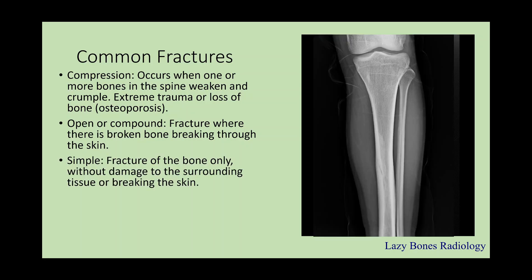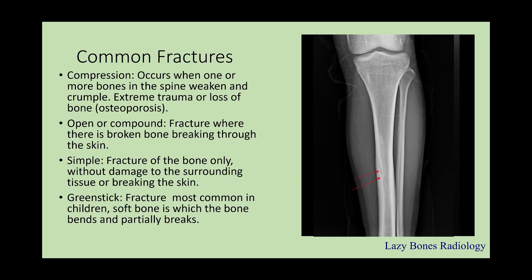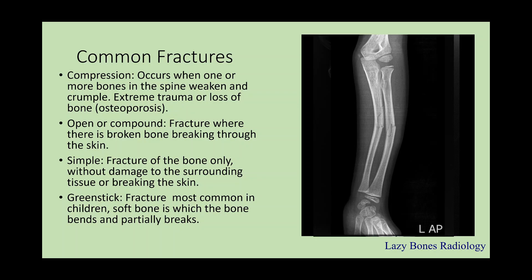A simple fracture is a fracture of the bone only, without damaging surrounding tissues or breaking the skin — as you can see here, this is a hairline or simple fracture. Next is the greenstick fracture, most common in children, where the soft bone bends and partially breaks, as you can see here.